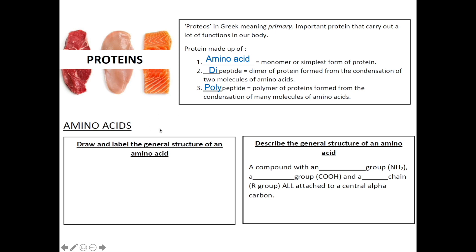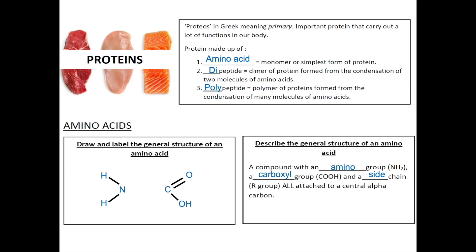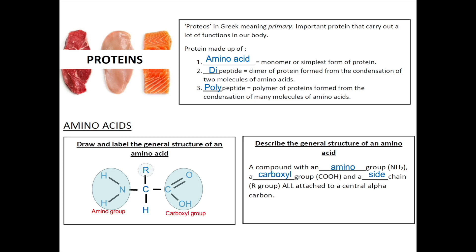Let's have a look at how we describe the general structure of an amino acid. An amino acid is a compound with an amino group (NH₂), a carboxyl group (COOH), and a side chain represented by the R group, all attached to a central alpha carbon. Since carbon can form a maximum of four bonds, we complete the last bond by bonding it to hydrogen. To label: this is the amino group, this is the carboxyl group, and this is the side chain.